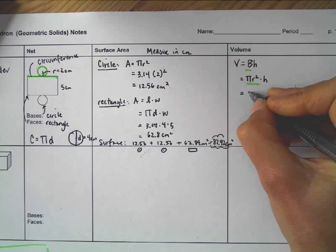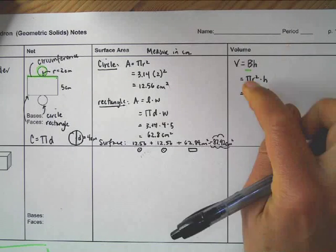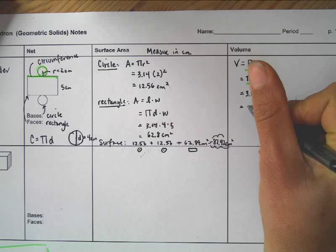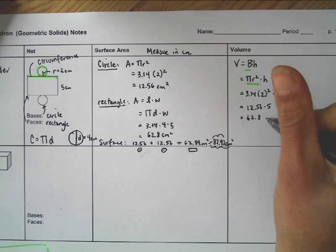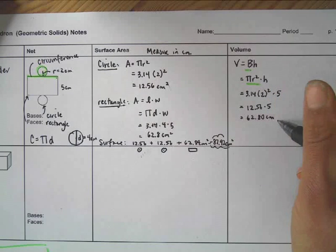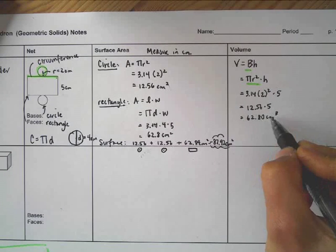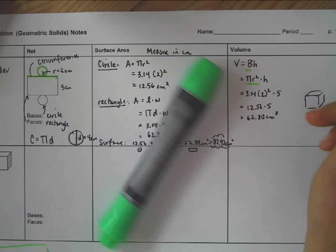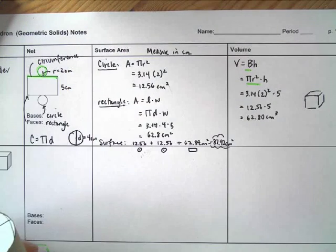Then I'm going to substitute my values in. Pi is 3.14, the radius as we measured it is 2 squared, and we said the height is 5. So I get 12.56 times 5, or 62.80 centimeters. And once again, now this is centimeters squared times another centimeter, so this ends up being cubed. So basically about 63 little centimeters cubed would fill this shape.